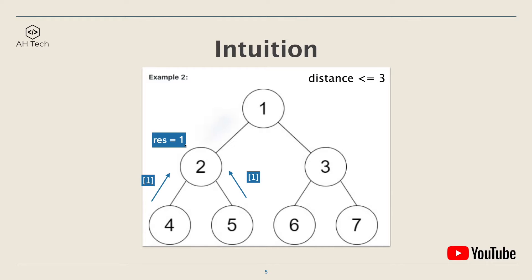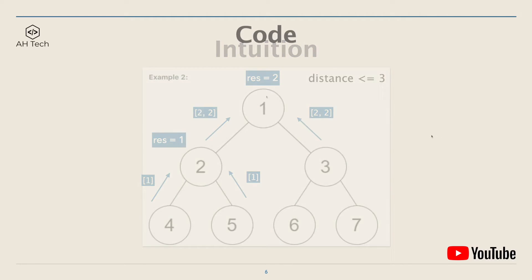At node two, the DFS function returns a list of two and two, meaning there is one leaf node at distance two and another leaf node also at distance two from node two. Because the tree is symmetric, the right subtree of node one also returns the list two, two. Finally, we get the result of two for this example.